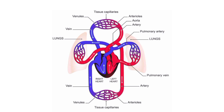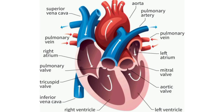The heart is a muscular organ that pumps blood throughout the circulatory system. It is situated in between the two lungs in the mediastinum. It is made up of four chambers: two atria and two ventricles. The musculature of the ventricles is thicker than that of the atria, and the force of contraction depends upon the muscles.